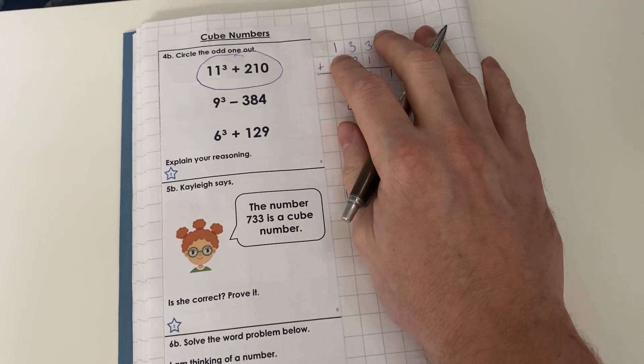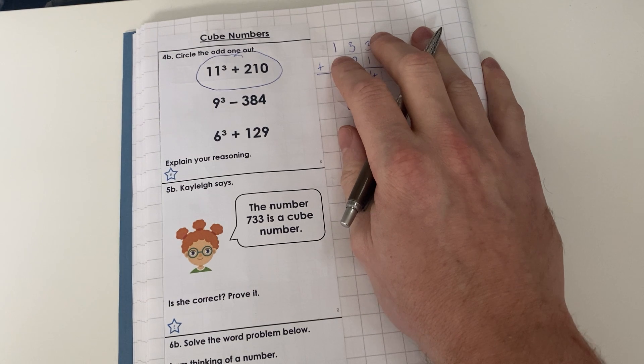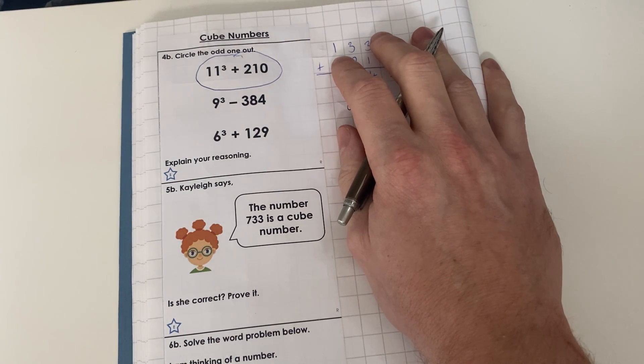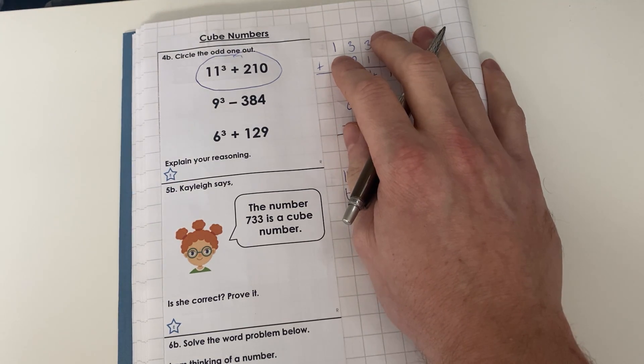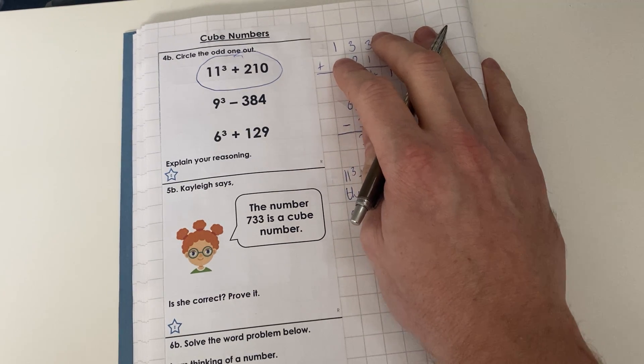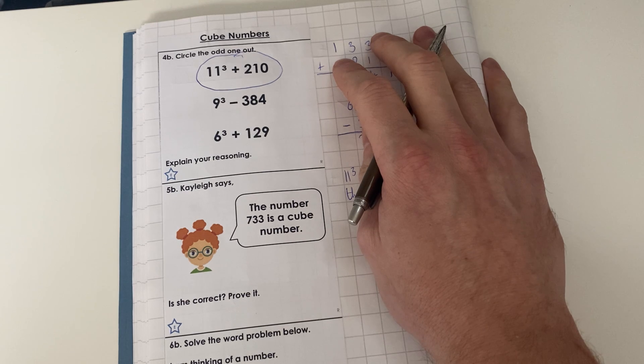Second question. Kaylee says the number 733 is a cube number. Is she correct? Prove it. Now to do this, you can use your answers on that extra sheet that you've got to prove it. And the best way of proving it is finding a cube number.